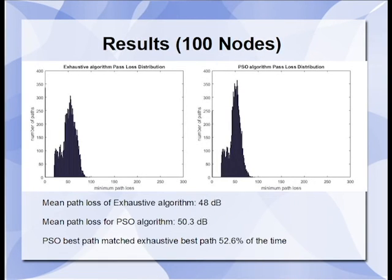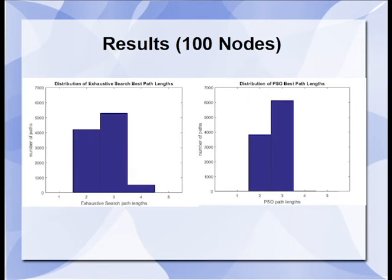For the 100 node test, the results were fairly similar. As you can see, the shapes of the path loss magnitude distributions were very similar to each other. The mean path losses of the two algorithms were only 2 decibels different from each other. The best paths matched 52.6% of the time, but when it did not match, it was still pretty close. These graphs show the path lengths of the best found paths from both algorithms. It shows that PSO was more likely to find better 3 node length solutions and missed some of the 4 length ones.